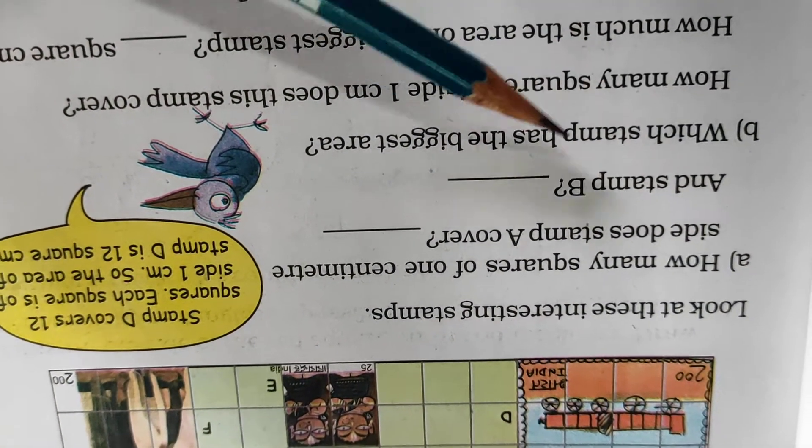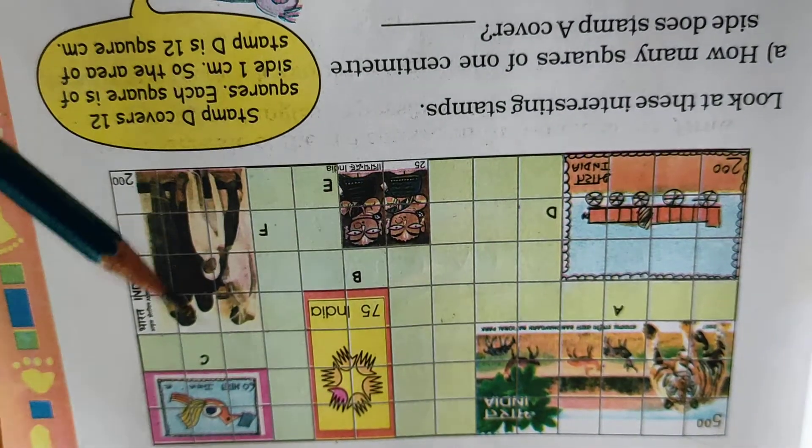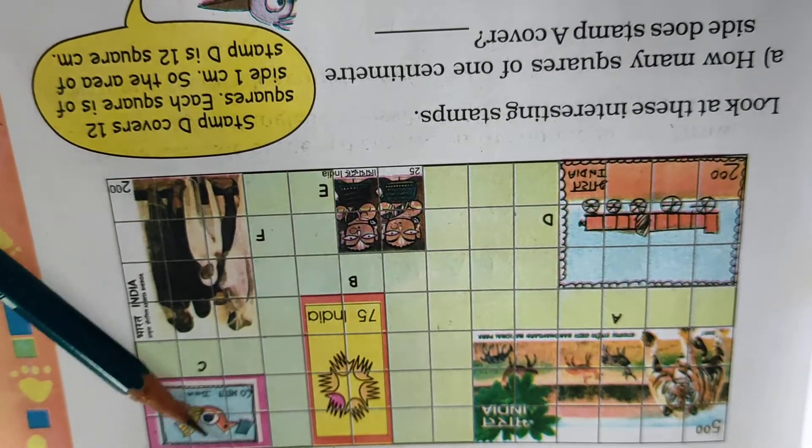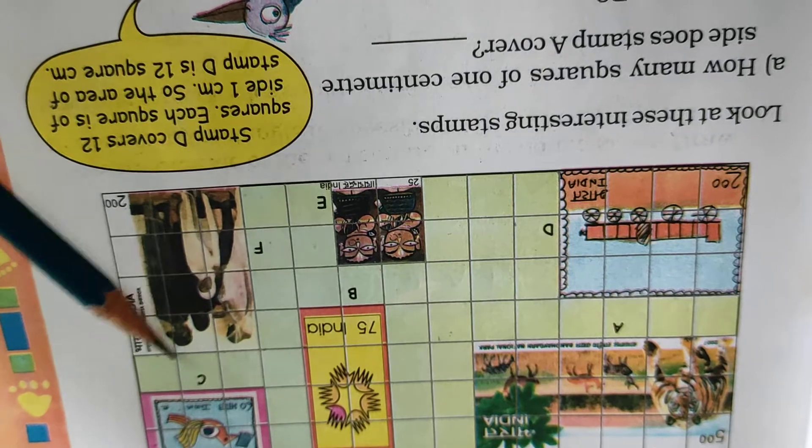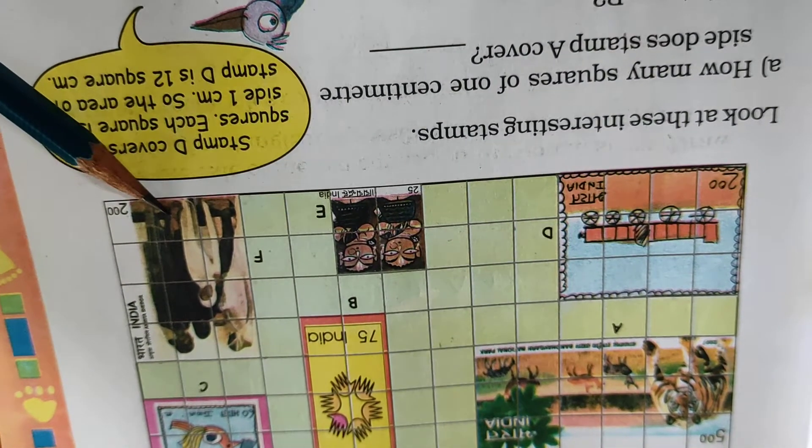Which stamp has the biggest area? Which one? So count all the... here 1, 2, 3, 4, 5, 6. Here 1, 2, 3, 4, 5, 6, 7, 8, 9, 12, 13, 14.